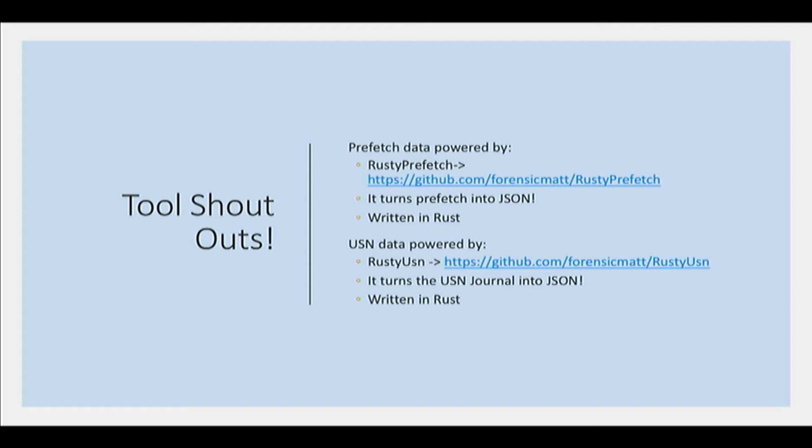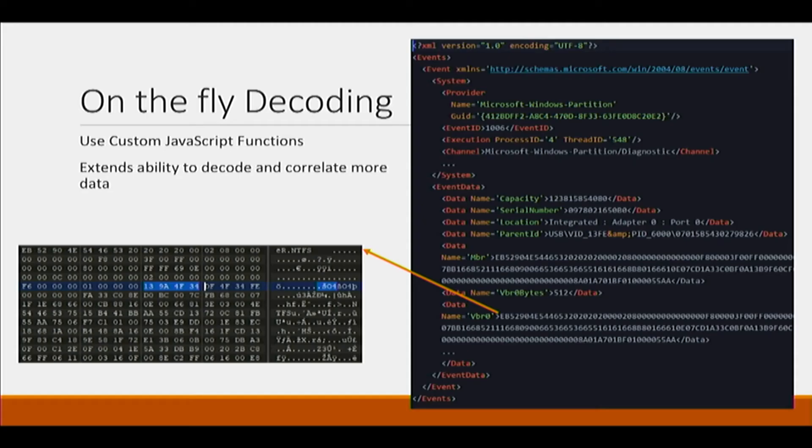A while back I made some Rust tools — they're really cool. If you're into turning artifacts into JSON, these are great tools for it. Plus, they're written in Rust, so they're super fast. You can find them on GitHub.